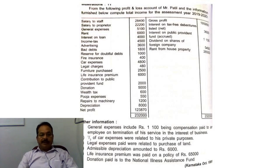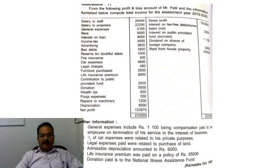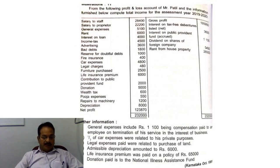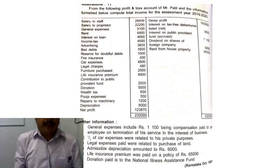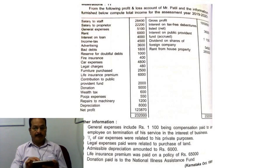Number one: Income from Business. Under that, net profit as per profit and loss account is 1,23,870. Add: expenses disallowed or chargeable under other heads.